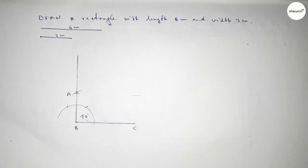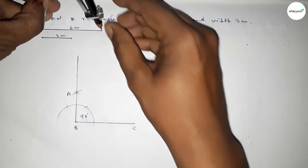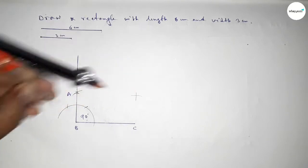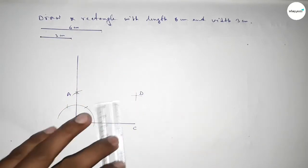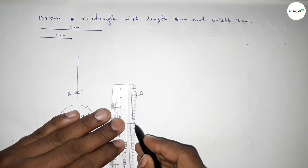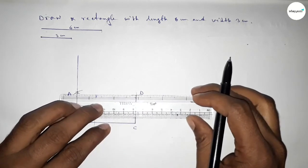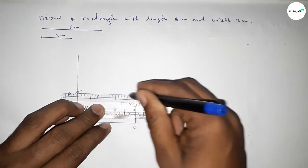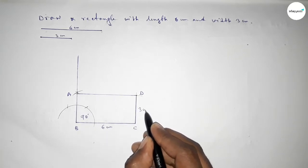Taking here a point A. Now taking the length 6 centimeter using the compass and putting the compass here and cutting, so both curves intersect at point D. Now joining C and D, then joining A and D to get rectangle ABCD.